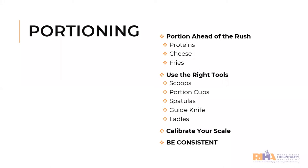Portioning is key, but it has to be done right and consistently. You cannot expect your staff to portion correctly if you do not give them the tools they need. Portioned items should be your high-cost items — for example, proteins, cheeses, fries. These are all frequently used items and they cost a lot of money. The way to be successful with portioning is to portion ahead of time. On the fly, when something is not portioned, you're going to get all kinds of weights — over and under. Under is also not what you're looking for because your guests will notice.